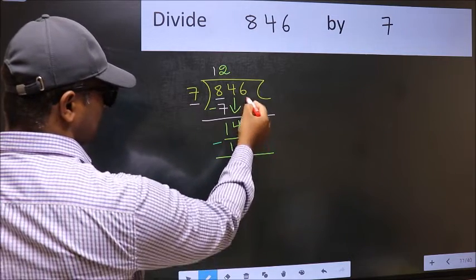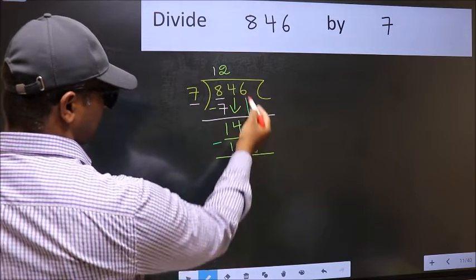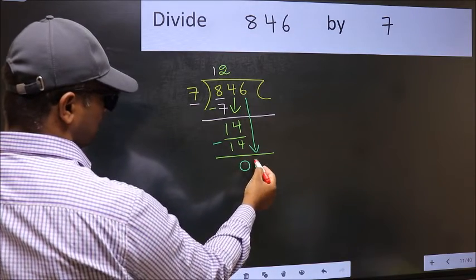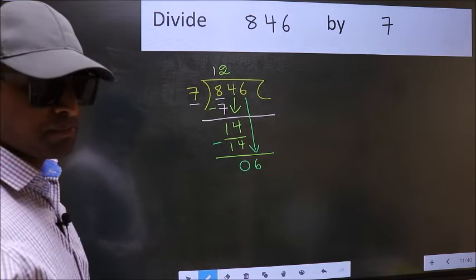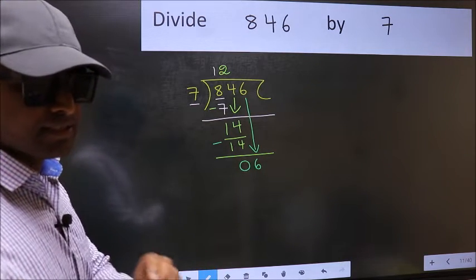After this, bring down the beside number. So 6 down. After this step, the mistake happens. And the mistake is this.